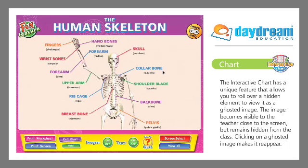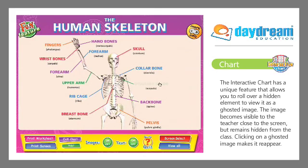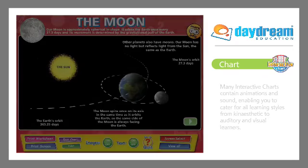The interactive chart has a unique feature that allows you to roll over a hidden element to view it as a ghosted image. The image becomes visible to the teacher close to the screen, but remains hidden from the class. Clicking on a ghosted image makes it reappear.